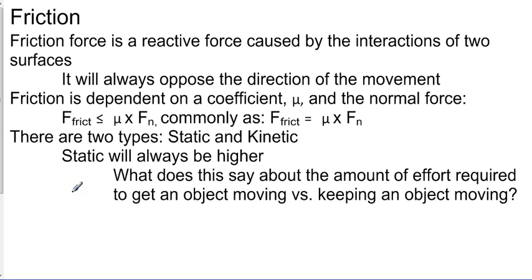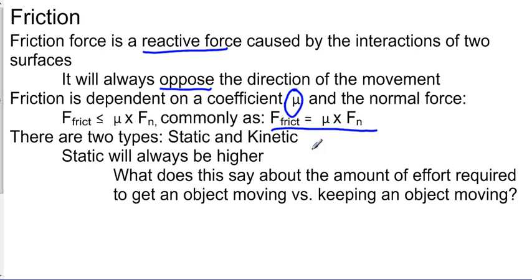Now, friction. Friction force is a reactive force caused by the interactions of two surfaces. It will always oppose the direction of movement or the direction of the applied force. Friction is dependent on a coefficient mu and the normal force — the reactive force of the surface. The force of friction equals mu times Fn. There are two types of friction: static, for when the object is not moving, and kinetic, for when the object is moving. In the real world, static friction will always be higher than kinetic friction.